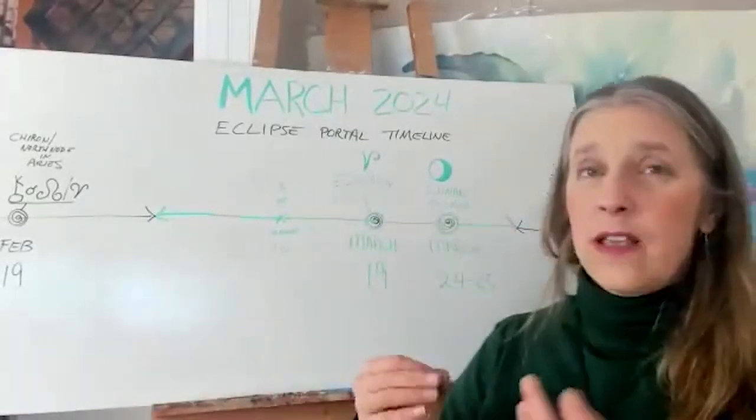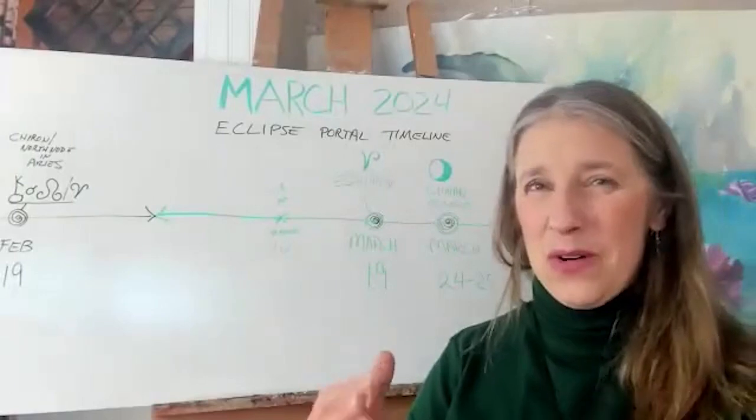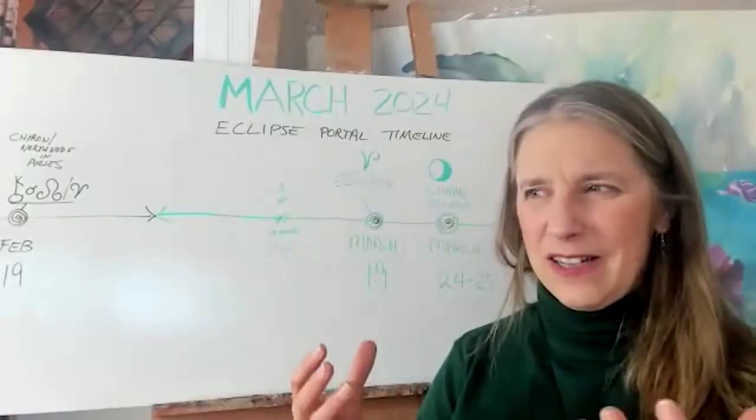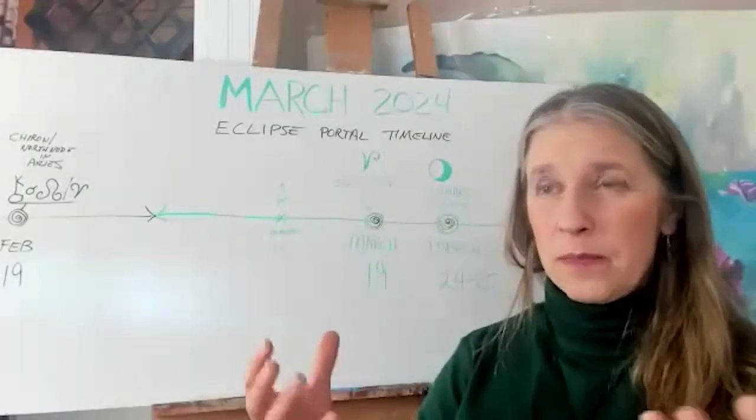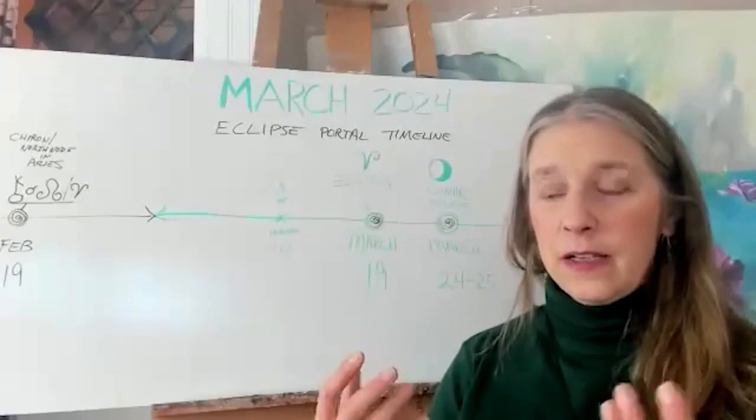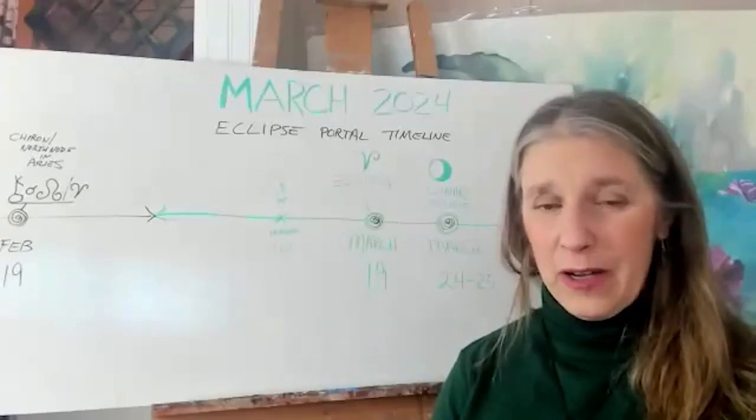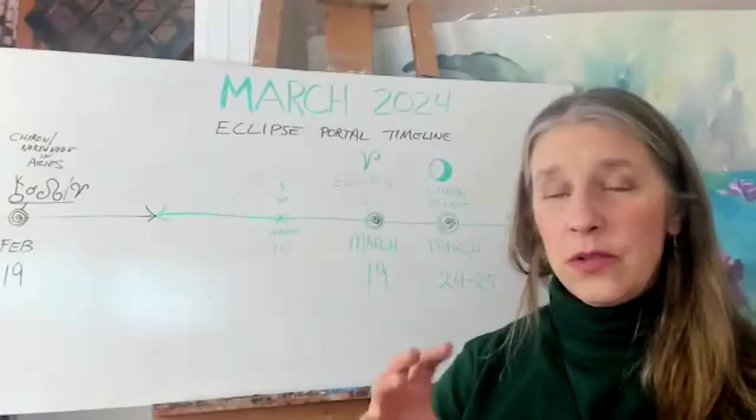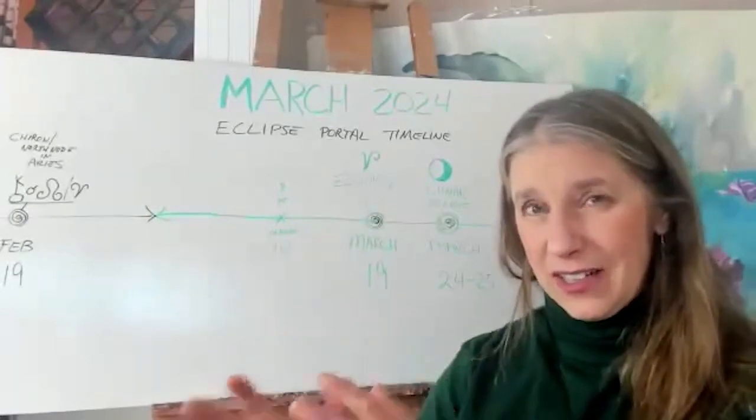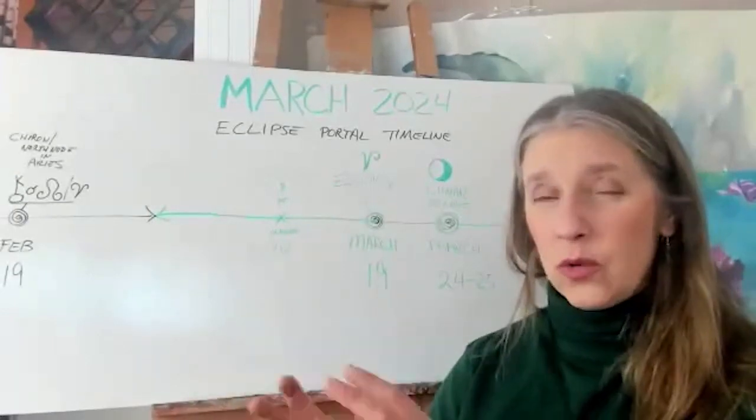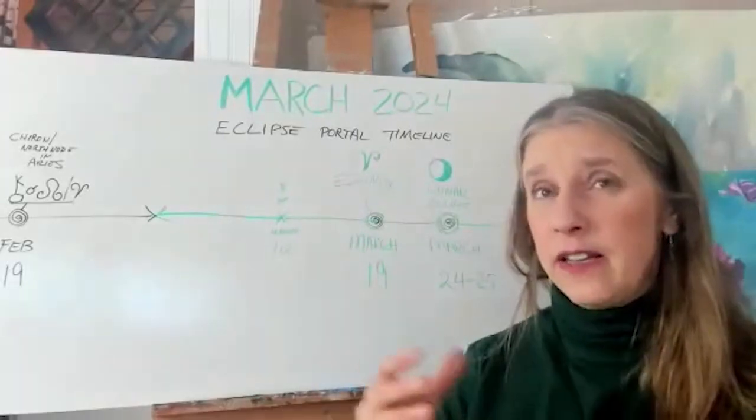I feel like after this whole portal that we're in with the eclipses, we may see more of the new earth sort of people coming together, communities springing up, heart-centered communities. The earth really is, it's a tipping point, tipping more towards heart-centeredness.